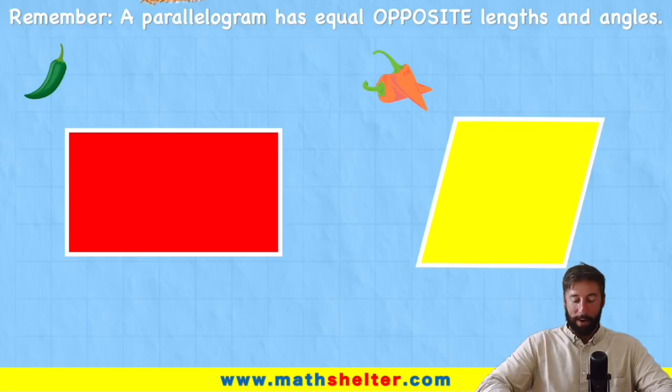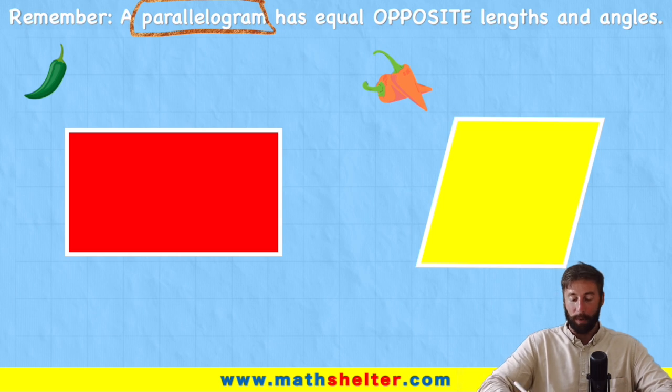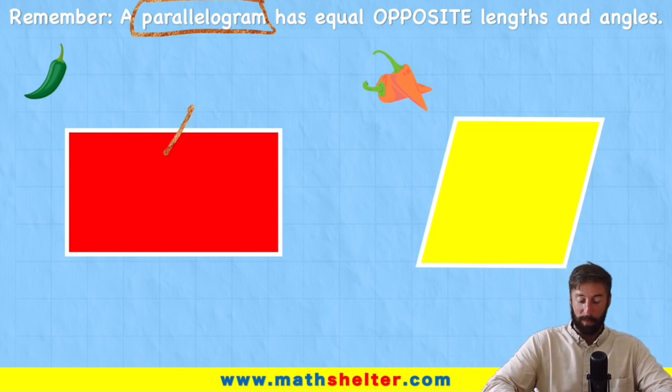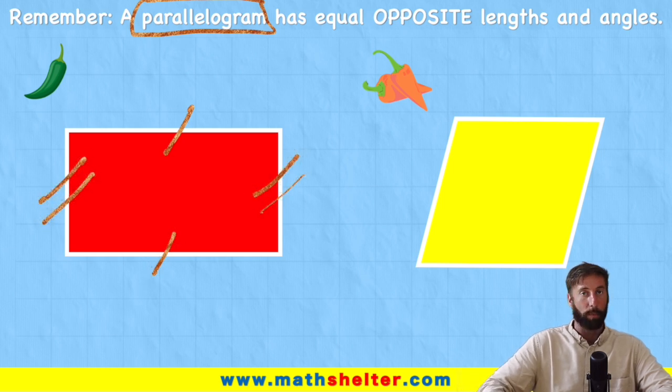Okay, so what do we need to know about a parallelogram before we can start? Well, a parallelogram just means that a shape has the same opposite lengths. So we can see this long length of this rectangle here is the same as this opposite length just here. And this short length is the same as the short length over on the opposite side.